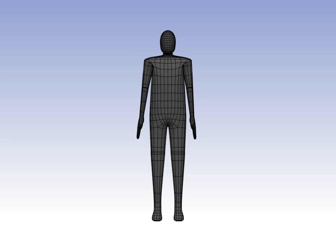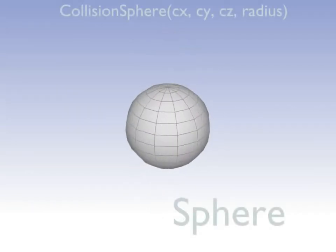Here are some of Panda's collision solids. Sphere is the only collision solid which can collide with every other shape. This is probably the one which you'll use for your player.